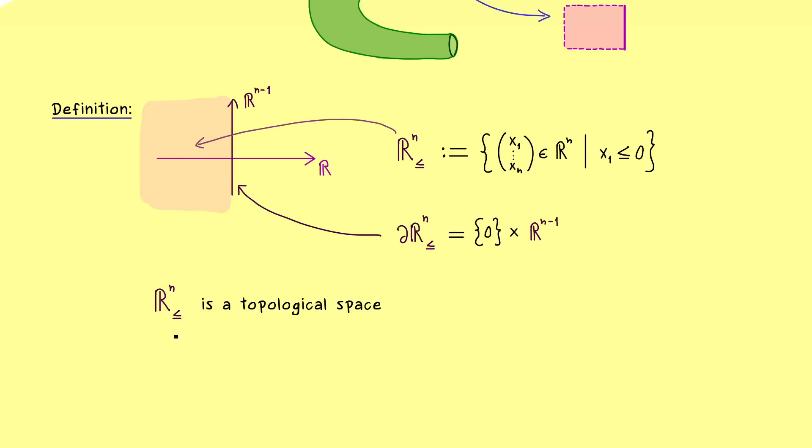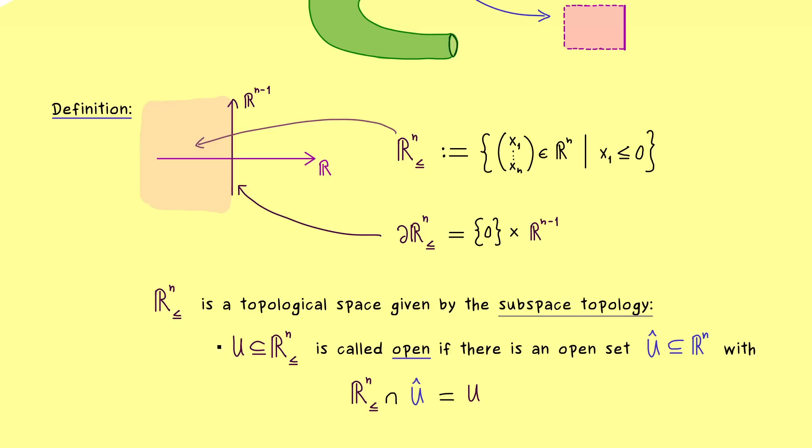Now speaking of topology, obviously our half-space is a topological space as well. This is quite clear because we always have the so-called subspace topology for subsets inside a given topological space. In fact, we can make it really concrete: any subset in our half-space is an open set if and only if we find an open set in the bigger space Rⁿ. And to distinguish that one, let's call it U-hat. And now the requirement we have for this open set is that the restriction of U-hat to the half-space is our U, or more precisely, the intersection is just our original set U.